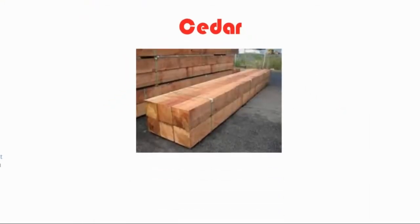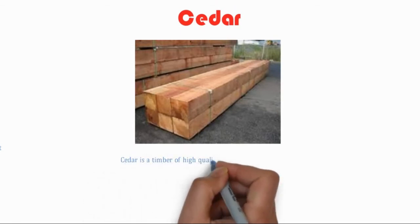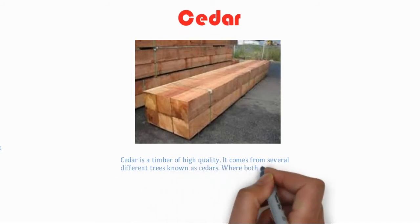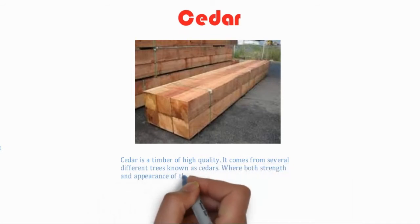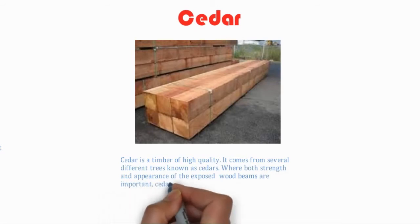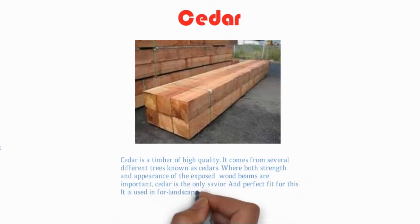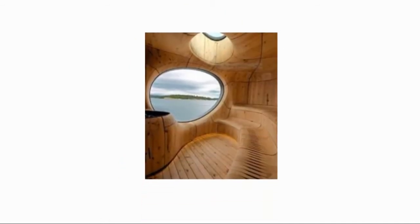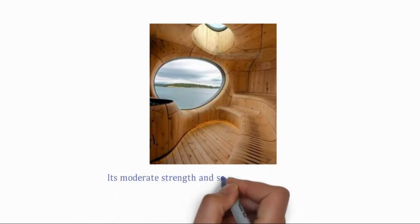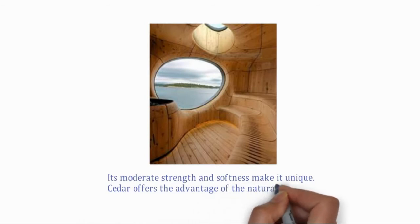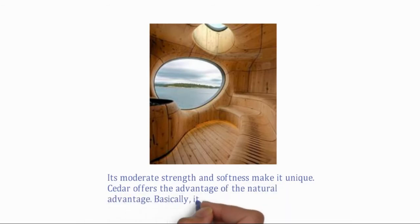Cedar is a timber of high quality. It comes from several different trees known as cedars. Where both strength and appearance of exposed wood beams are important, cedar is the perfect fit. It is used for landscape, park, and garden structures. Its moderate strength and softness make it unique, and cedar offers natural advantages as a workable material.